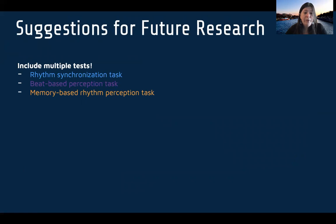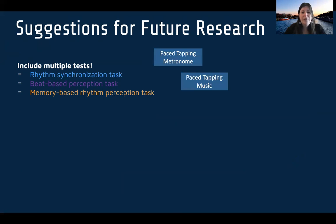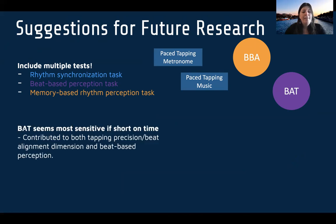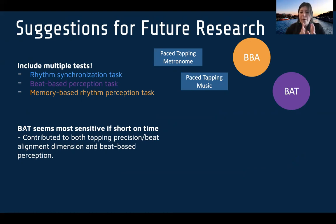For future research, we strongly suggest including multiple tests: a rhythm synchronization test such as a paced tapping task, a beat-based perception task such as the BAT, and a memory-based perception task such as the BBA or a rhythm reproduction task. If you're short on time, the BAT appears to be the most sensitive, as it contributed to both the tapping precision and beat alignment dimension as well as beat-based perception, suggesting it taps into synchronization as well.